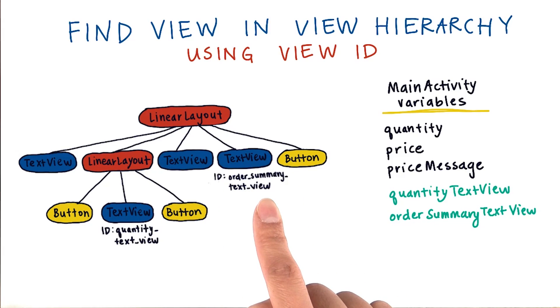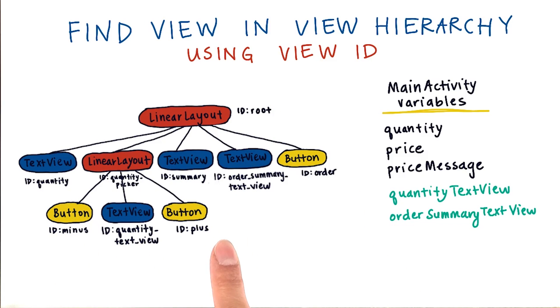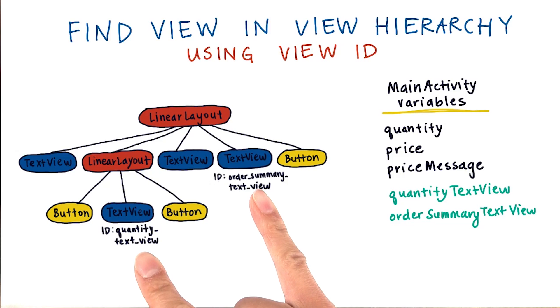It's optional to assign IDs to views, and you only should assign a view ID if you need to refer to that view later. For example, you can assign view IDs to everything, but that's unnecessary. We only really need to refer to these two views later in our Java code, so let's just assign IDs to these two views.